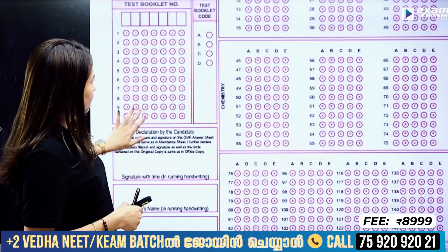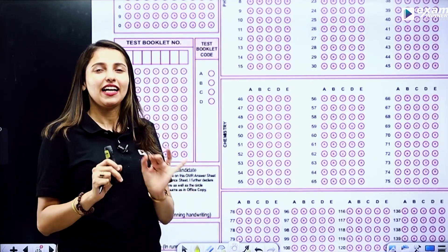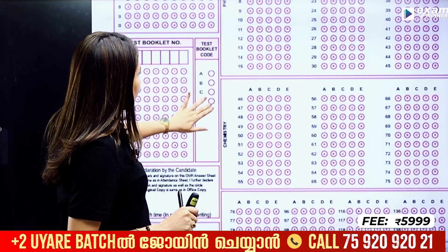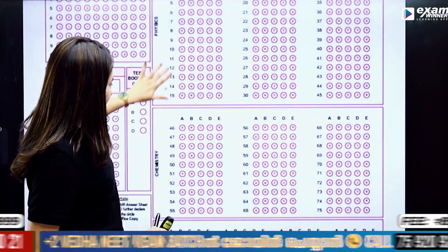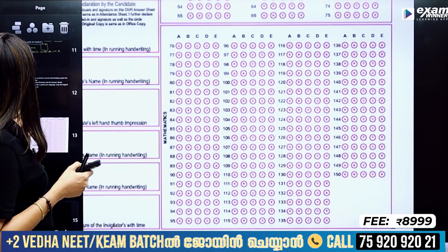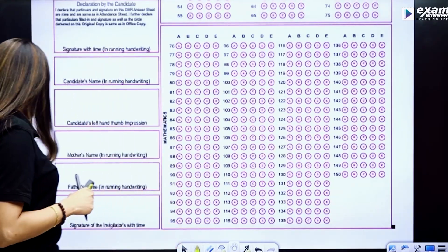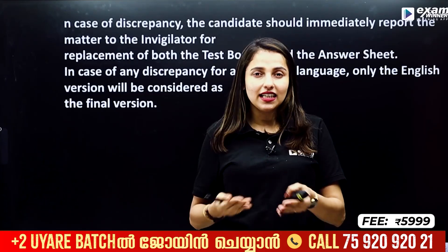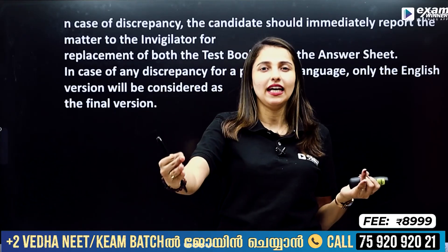If you have a roll number mistake, you cannot change the OMR sheet once submitted. In Physics there are 45 questions, Chemistry has questions as well, and Maths has 75 questions — or in the NEET pattern, 35 Physics, 35 Chemistry, and 75 Maths questions respectively. All these questions must be completed. Keep the OMR sheet procedure in mind throughout.